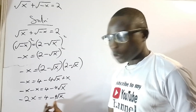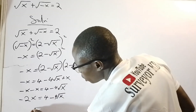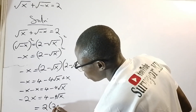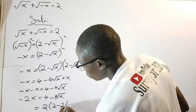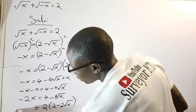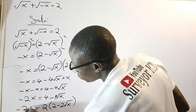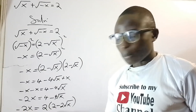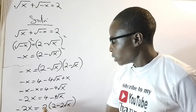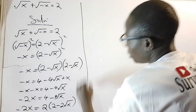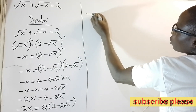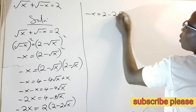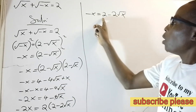I have something in common which is 2, so I factor 2 out on the right: 2(2 minus 2 root x). On the left hand side I have negative 2x, so I divide both sides by 2. These twos cancel, giving me negative x equals 2 minus 2 root x.